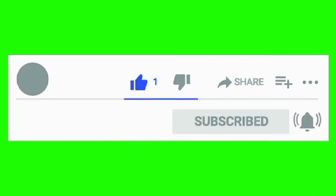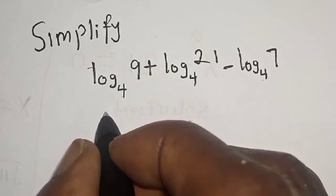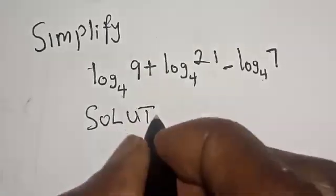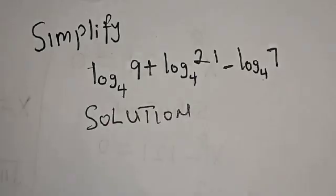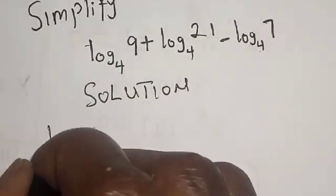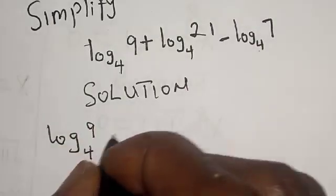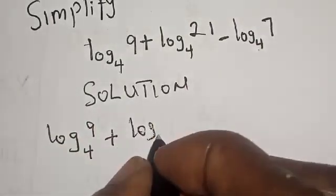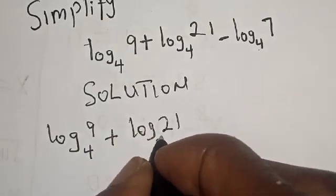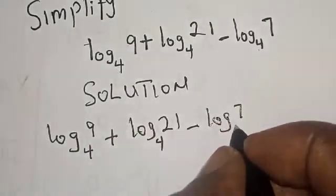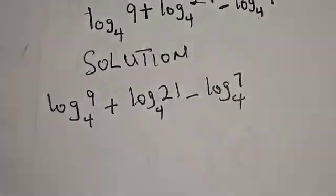Solution: log₄ 9 + log₄ 21 - log₄ 7. We want to simplify this.